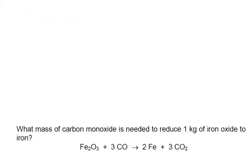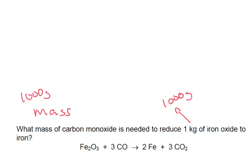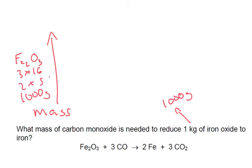That's our final one. What mass of carbon monoxide is needed to reduce 1 kilogram — which is 1,000 grams — of iron oxide to iron? So we've got our mass of iron oxide: 1,000 grams. It's Fe₂O₃, so oxygen is 3 times 16, and iron is 2 times 56. The total molecular mass is 160.